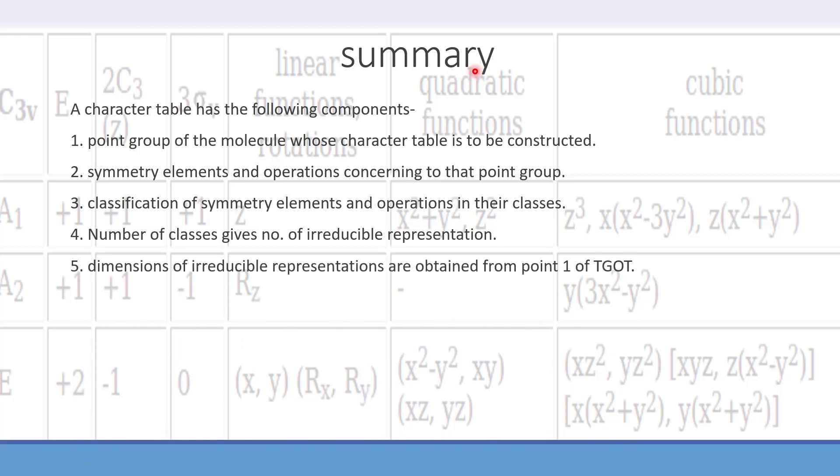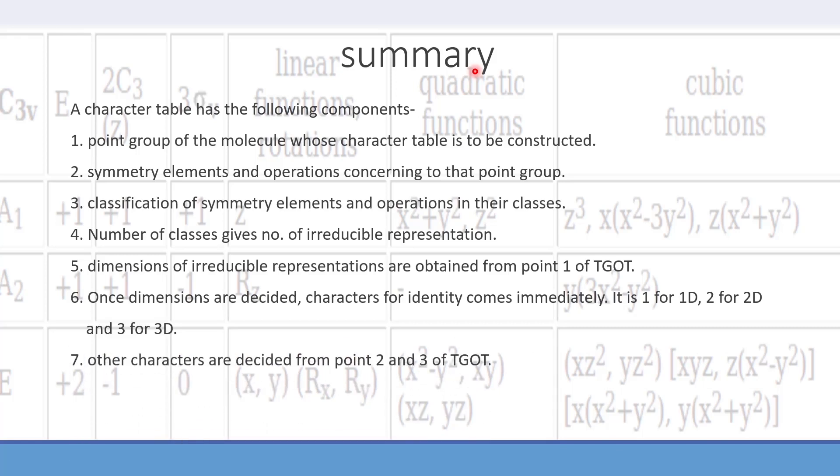Rule number five, the great orthogonality theorem. Dimensions can be obtained by rule one of the great orthogonality theorem. Thus, sum of the squares of the dimension equal to order of group. Once dimensions are decided, characters are identified for 1D, 2D, 3D, etc. for identity. And other characters can be used from the orthogonality concept rule 2 and 3. So this is how we can use the character table and understand the components.